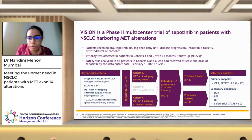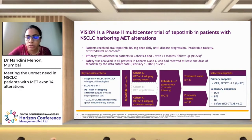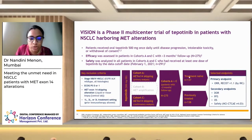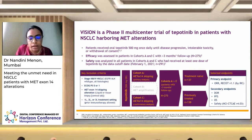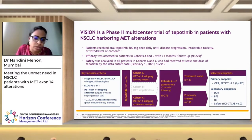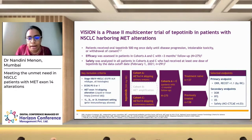A total of 275 patients with MET exon 14 skip mutations were included: 137 were treatment-naive and 138 had received prior treatment. This was a phase 2 study with objective response rate as the primary endpoint using RECIST 1.1 assessed by independent review committee. Secondary endpoints included PFS, OS, and safety analysis.